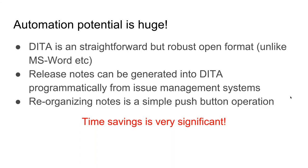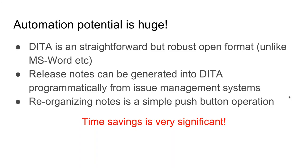What this comes down to is enormous automation potential. DITA is straightforward and a robust open format that lets you focus on writing content and styling later. We realized that a big part of our process — getting information out of our issue management system — could be totally automated. We created a system that allows us to push a button and get a copy of all our issues from a certain release in JIRA, automatically converted to DITA. That alone removed about 25% of the time we were spending on our release notes process.